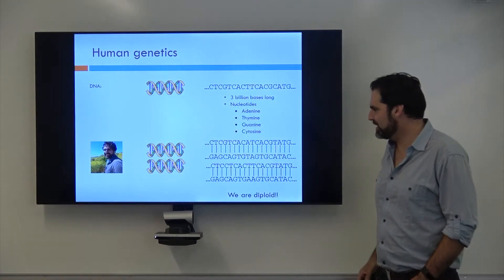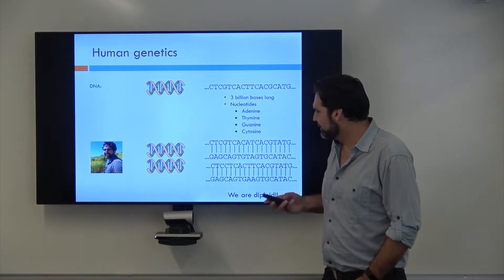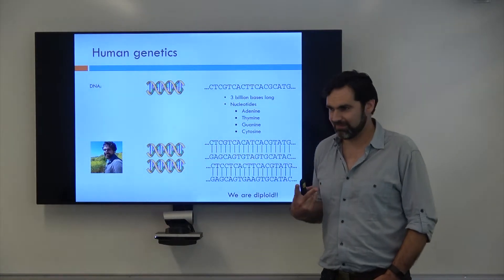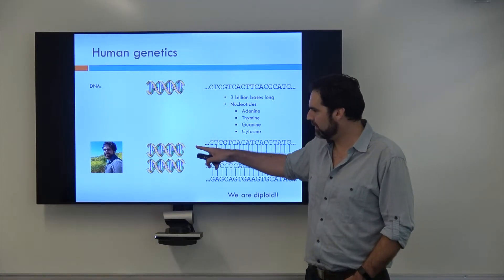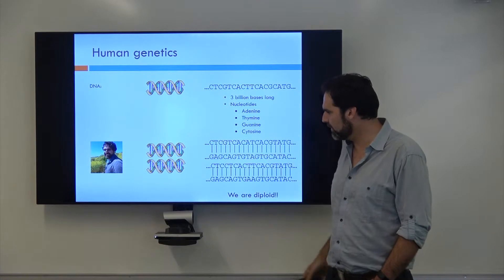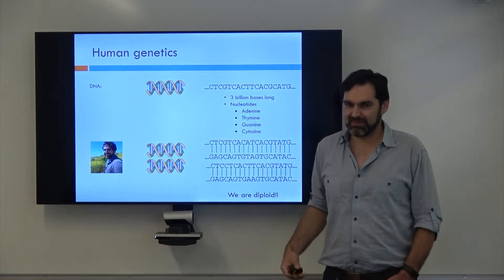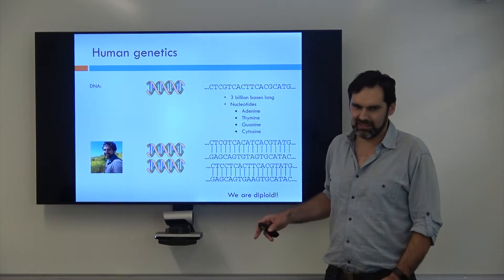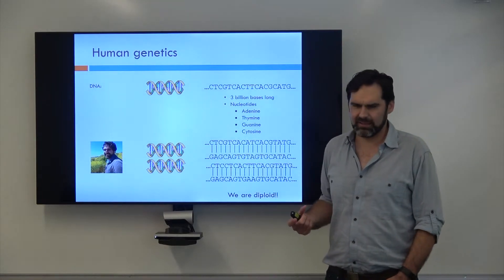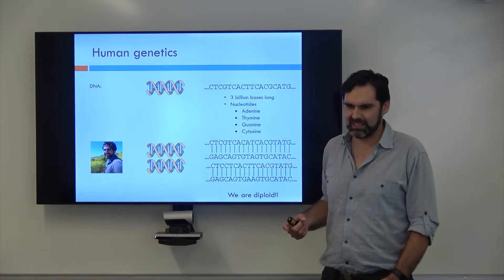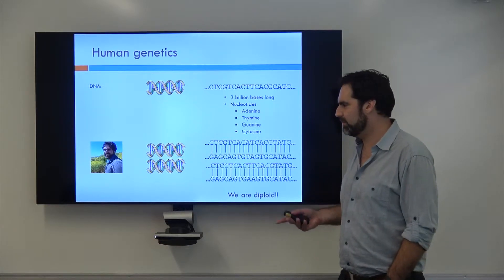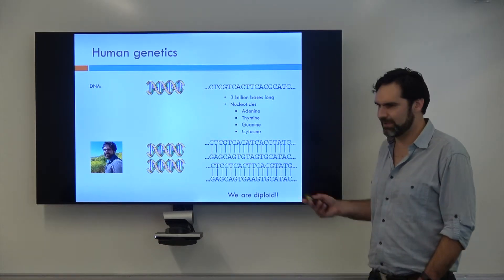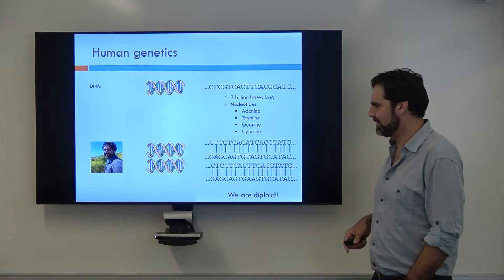All right so human genetics. We carry two copies of our DNA. We carry one copy from each of our parents and organisms that carry two copies of their DNA are called diploid as opposed to organisms like bacteria that only carry one copy of their DNA and are haploid. Not terribly important but if you ever hear the word diploid it just means two copies of your DNA.